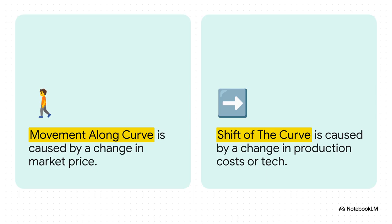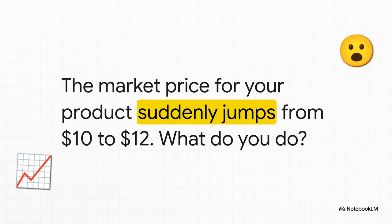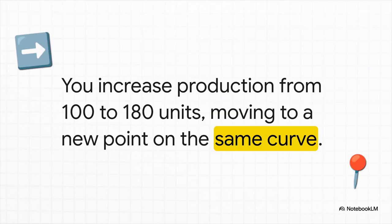Let's tackle movement first. Going back to our tomato farmer: their marginal cost to produce 100 tomatoes was $10. Now imagine the morning news comes out and suddenly the market price for tomatoes jumps from $10 up to $12. Since the price is now $12, it's suddenly profitable for the farmer to produce more. They'll keep increasing production right up to the point where their marginal cost equals that new price, which on our chart is at 180 units. They didn't change their business — they just reacted to the market by moving from point A to point B on their existing supply curve.